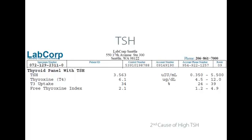This tells us that her pituitary is producing more than optimal amounts of TSH. Look at the thyroxine or T4 at 6.1. The reference range on the right says 4.5 to 12, so 6.1 is on the lower side of optimal — optimal being around 8 or 8.5. Accordingly, the pituitary is sensing there's not quite enough thyroid hormone and is increasing TSH to stimulate the thyroid cells to make more.